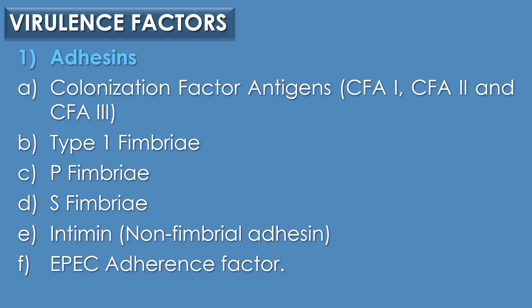Virulence factors of E. coli: The term virulence represents the ability of the microorganism to cause an infection or disease. The term virulence was first coined by the scientist Louis Pasteur. The term virulence factors represents the factors which are responsible for causing an infection in human beings. E. coli is able to produce nearly 7 virulence factors. Among the 7, the first virulence factor is adhesins.